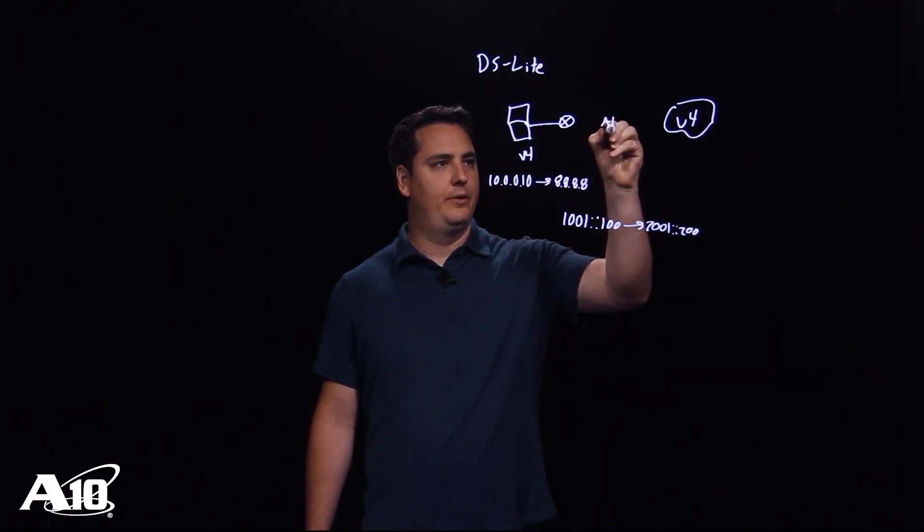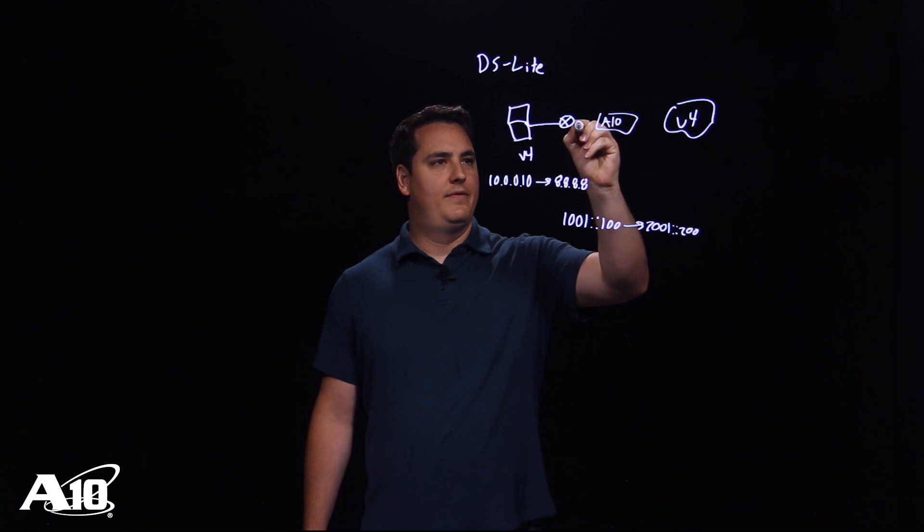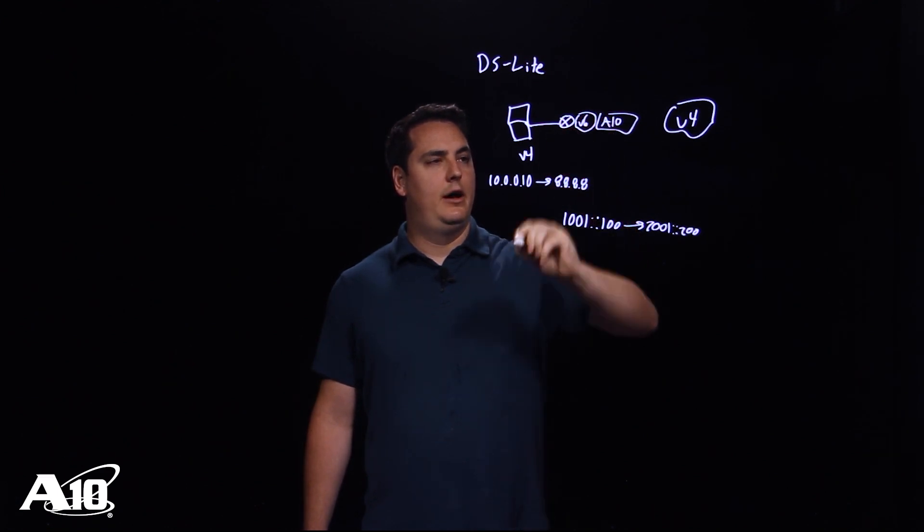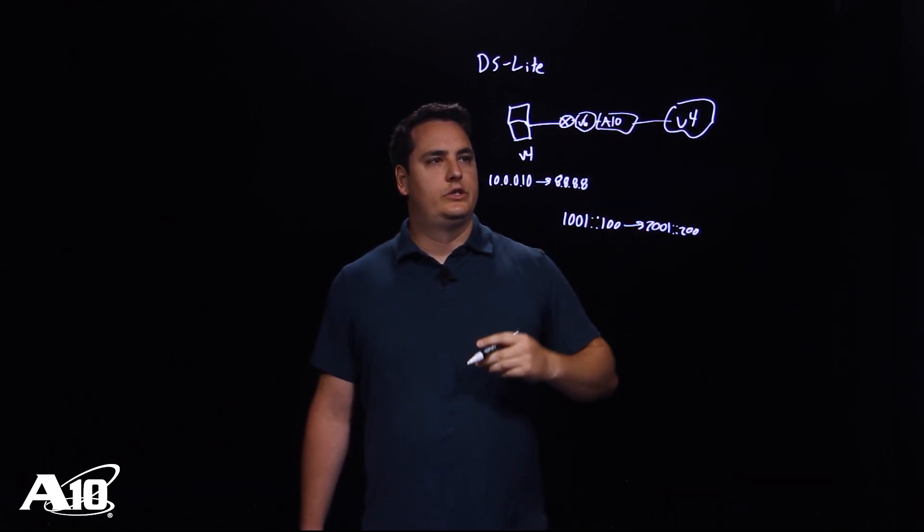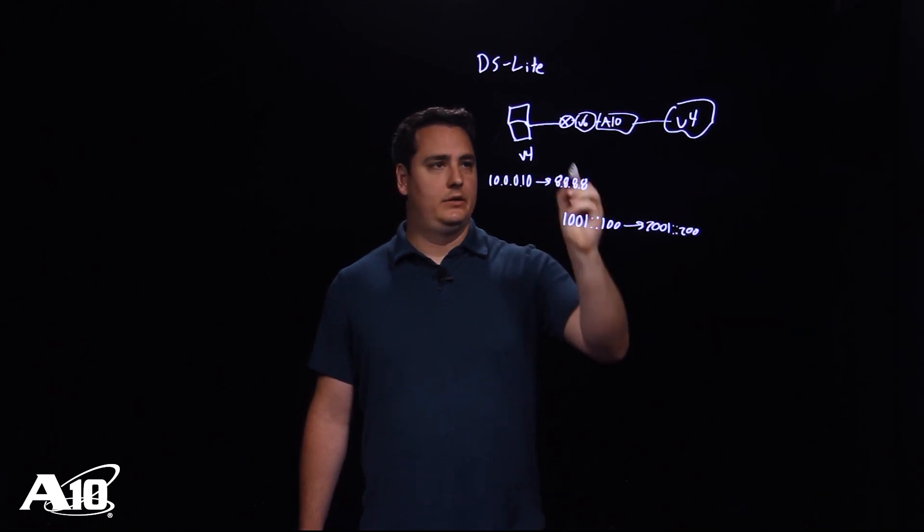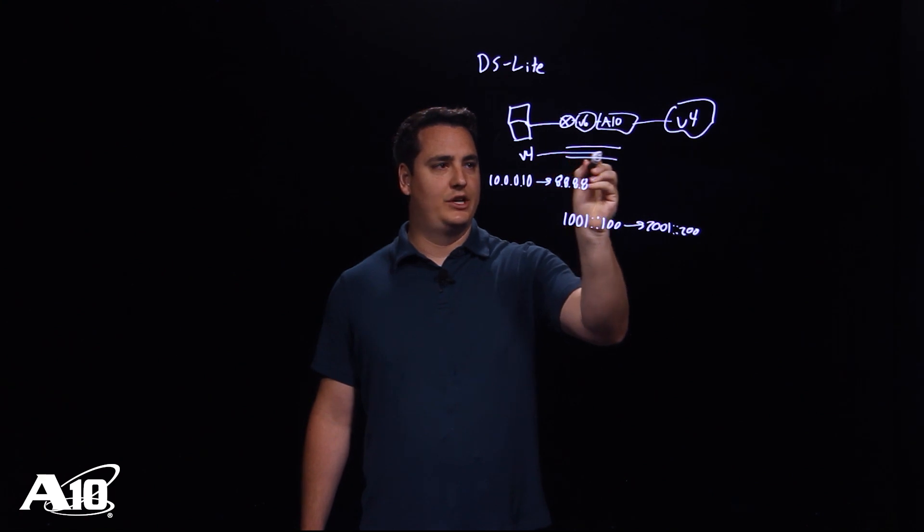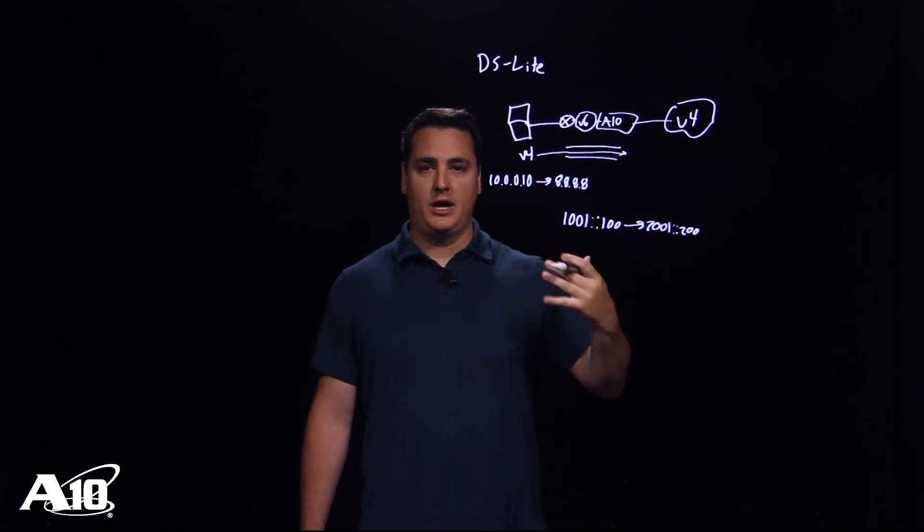So we'll have the A10 here in the middle and we'll have the v6 network between those two. So when the router encapsulates the traffic, we can see that kind of as a tunnel to the A10 and the v4 traffic will actually go through untouched, just wrapped up in a v6 wrapper.